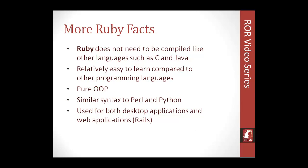Some other Ruby facts: Ruby doesn't need to be compiled like most other languages such as C, C++, and Java, where you'd have to use an IDE that would run them through a compiler and use more resources. Ruby doesn't have to be compiled — it's just read how it's written. Ruby is also relatively easy to learn compared to other programming languages, though it definitely does take a lot of work to learn any kind of programming language.